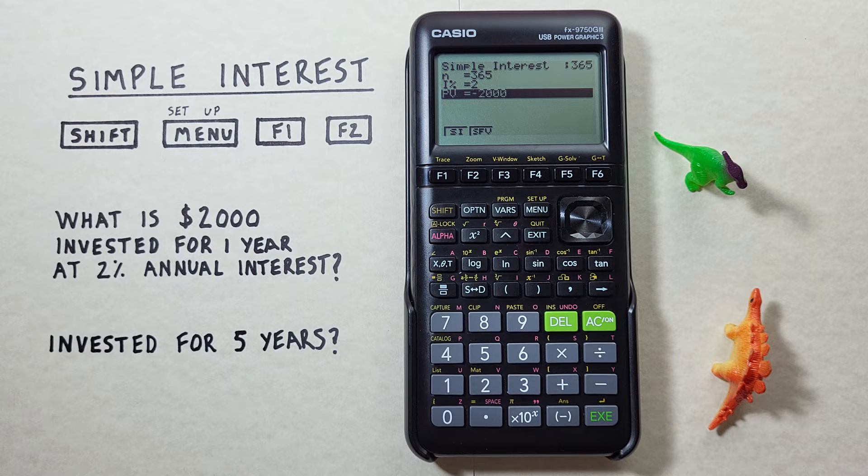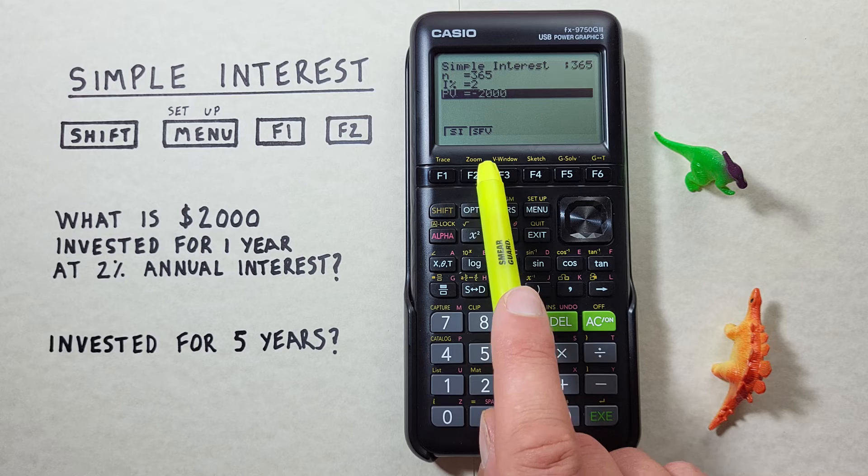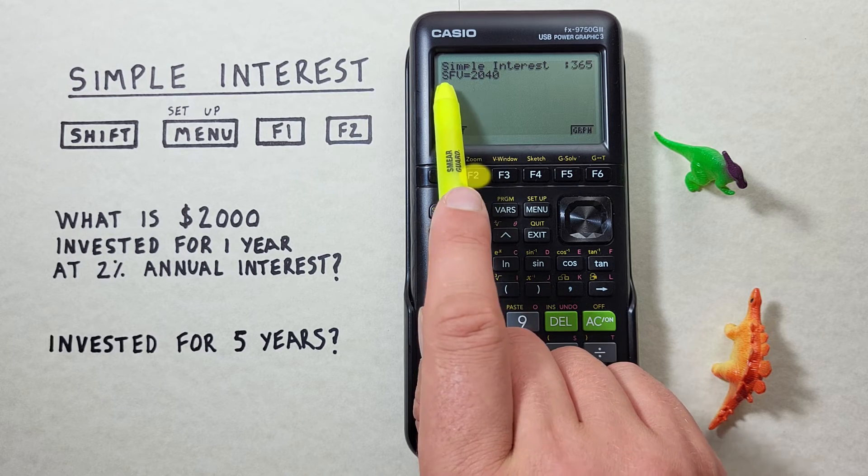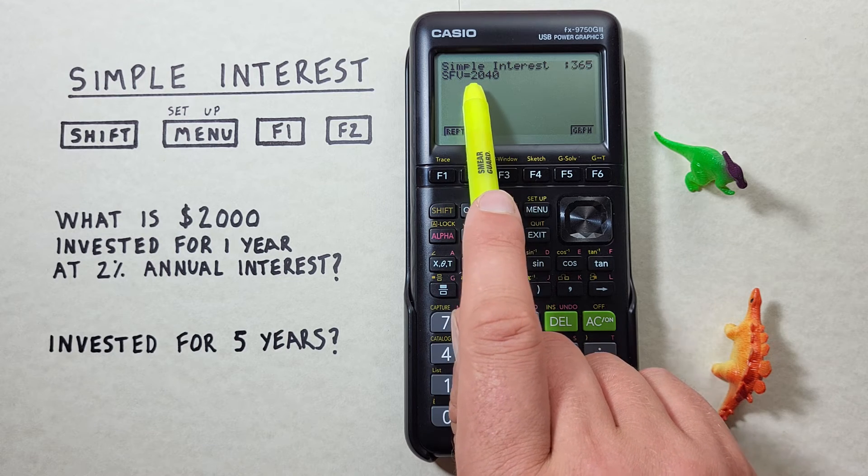We can also see the total final value or the SFV or simple final value by pressing F2. And see we get 2,040. So our total value at the end is $2,040.